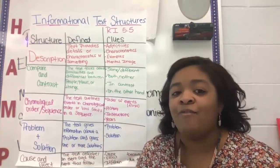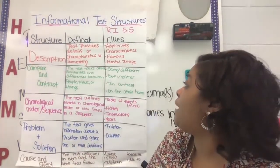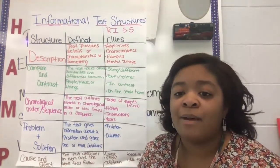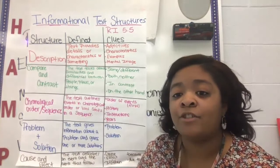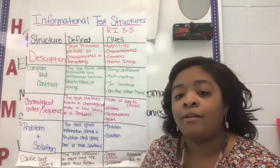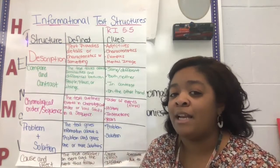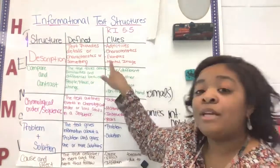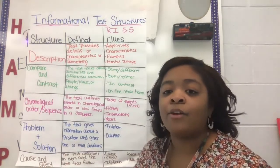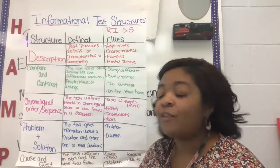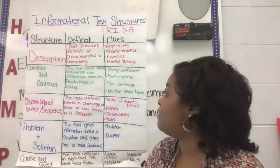So I'm describing to you what that event was like. For our definition: the text provides details or characteristics of something. Some clues we could find in a description text would be adjectives — for example, instead of saying 'there's a chair in my classroom,' you might say 'there's a blue chair in my classroom,' so an adjective is describing a noun. Other clues include characteristics, examples, and a mental image. As you're reading a description text, you should have a vivid image in your head of what the author is describing.